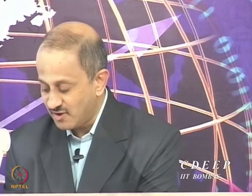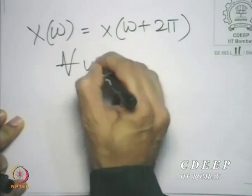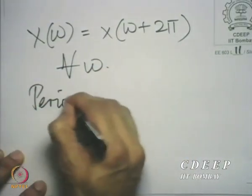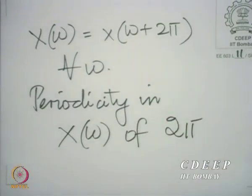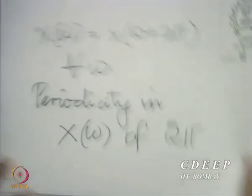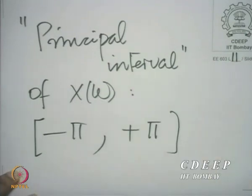We derived that X(omega) is equal to X(omega + 2π) for all omega, and therefore there is a periodicity in X(omega) of 2π. We also saw that the prime interval over which X(omega) needs to be considered is the interval from minus pi to pi — what we call the principal interval. It is adequate to look at the discrete time Fourier transform over this principal interval of minus pi to pi, because it would then be repeated at every multiple of 2π.